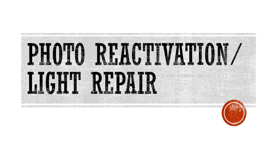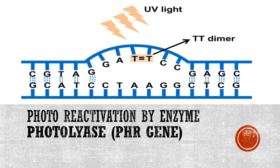Today we will see how DNA can be repaired using photo reactivation, or the light repair mechanism. As we know, UV light induces the formation of a TT dimer, that is a thymine-thymine dimer, on the double-stranded DNA.